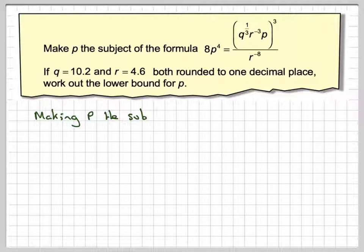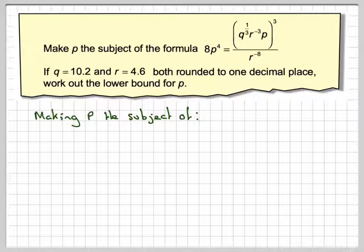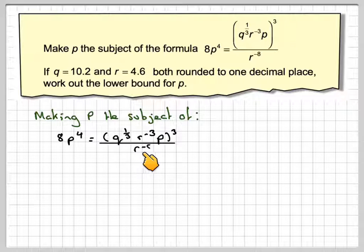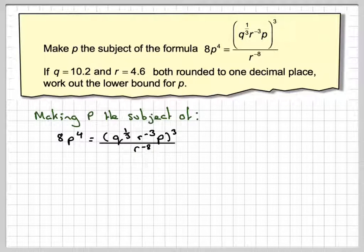So making P the subject of 8P^4 equals Q to the 1/3, R to the minus 3, P, all cubed over R to the minus 8. Now, first of all...